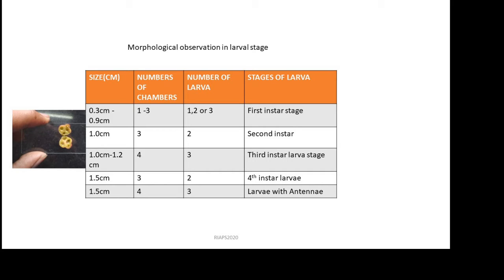In the larval stages we found four stages of larvae, and the number of larvae survived in each chamber varied. We found there are one to four chambers, which depend on the size of the GALs.